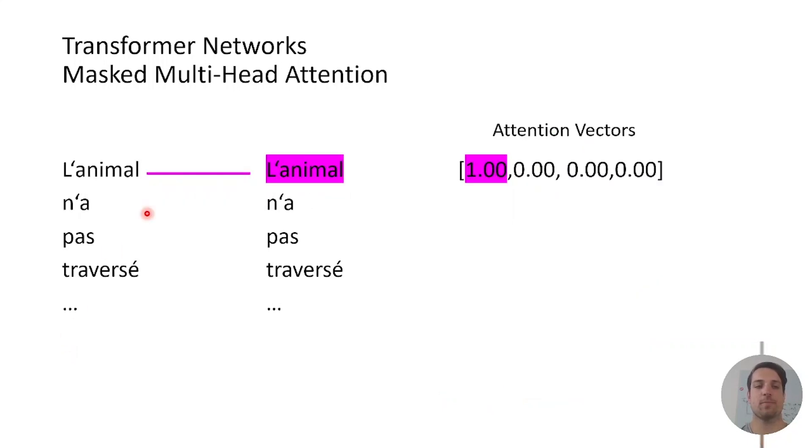The masked multi-head attention also calculates the attention vectors like before but it cannot take data points into account which lie further into the future. For example for analyzing the sentence 'l'animal n'a pas traversé', for the first word 'l'animal' it only can take itself into account because there are no previous data points. The attention vector does not provide any information because it only gives one for itself and zero for all remaining words because they are masked out.